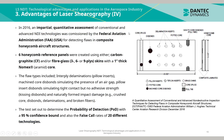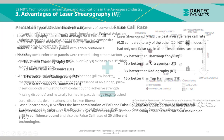In 2016, an impartial quantitative assessment of conventional and advanced NDI technologies was commissioned by the Federal Aviation Administration for detecting flaws in composite honeycomb aircraft structures. Six honeycomb reference panels were created using carbon graphite and/or fiberglass 3-6-9 ply skins with a one-inch thick Nomex aramid core. The flaw types included inter-ply delaminations, machined core disbonds simulating an air gap, pillow-insert disbonds simulating tight contact but no adhesive strength (kissing bonds), and naturally formed impact damages such as crushed core disbonds, delaminations, and broken fibers. The study determined the probability of detection (POD) with a 95% confidence bound and false call rates across 20 different technologies.